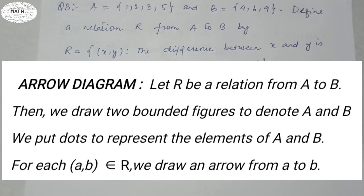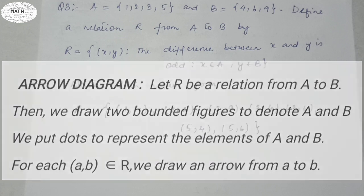A note on arrow diagrams: let R be a relation from A to B. We draw two bounded figures to denote A and B, put dots to represent the elements of A and B, and for each (a, b) belonging to R we draw an arrow from a to b.